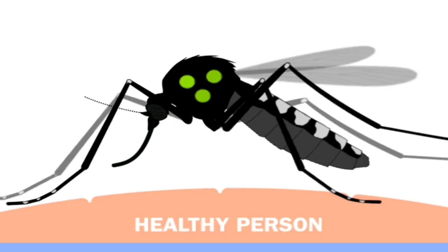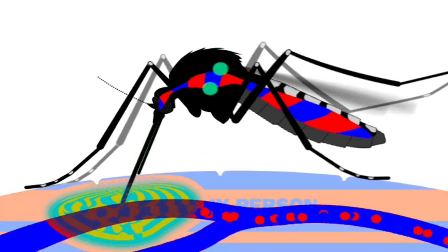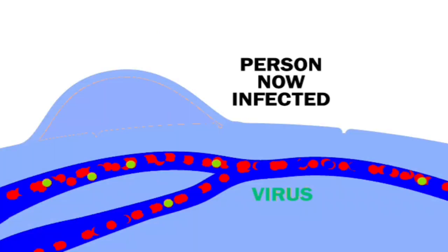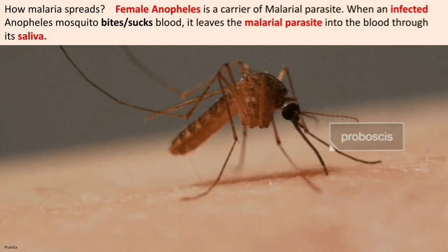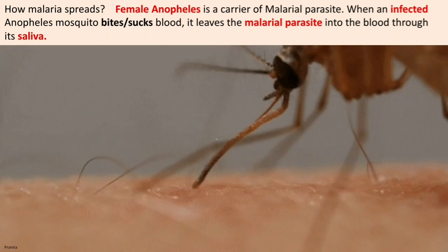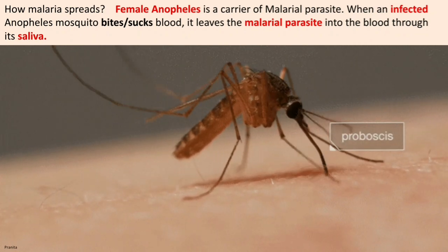Every year, mosquitoes kill many people around the world — more than any other diseases or disasters. Malaria is a disease caused by the bite of an infected mosquito. Not every mosquito causes malaria; only disease-carrying mosquitoes do. The female Anopheles is a carrier of the malarial parasite. When an infected Anopheles mosquito bites and sucks blood, it leaves the malarial parasite into the blood through its saliva.